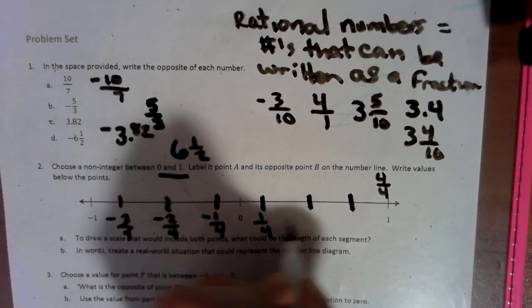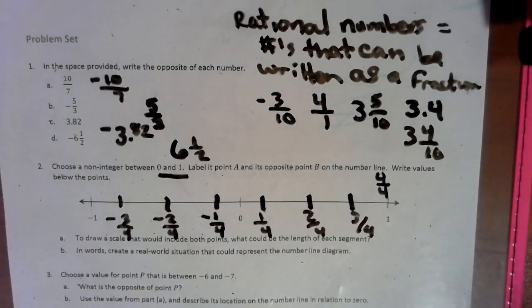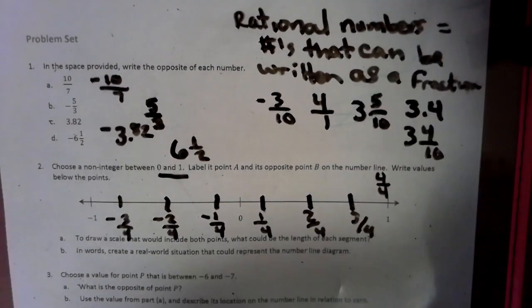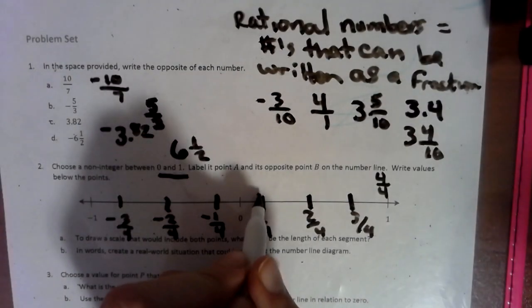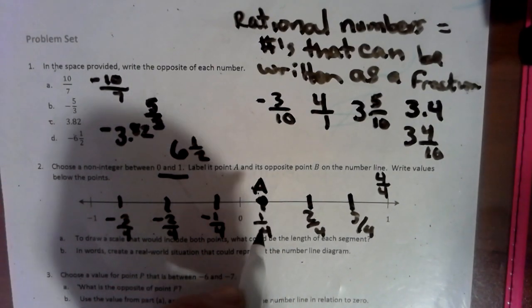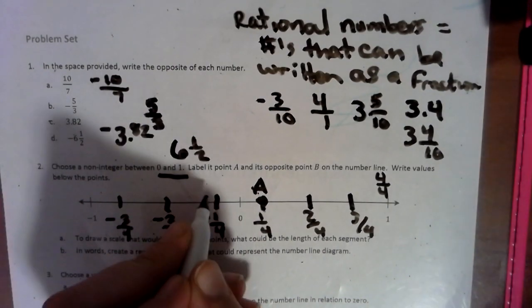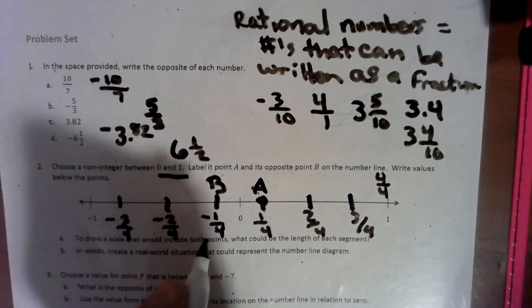So we can label one-fourth, two-fourths, three-fourths, so on and so forth. And it says label it point A. So if we pick this, let's say this, we're going to label that A. And then we look at its opposite. And its opposite of a positive fourth is a negative one-fourth. So that would be called B, right?